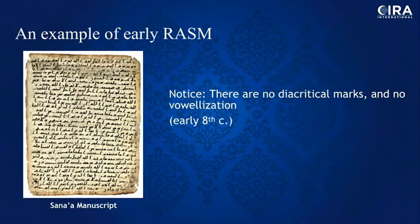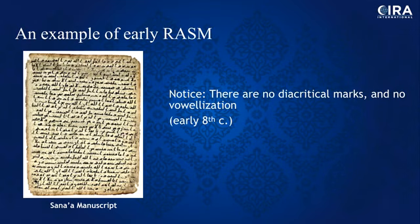Let's look at the Sana'a manuscript — one I'm passionate about because I'm doing my PhD research on it. The one I'm focused on specifically involves what is called a palimpsest, meaning it's a piece of leather that was written on, then wiped off, and another layer written on top. Scholars argue there's a 50-year difference between the lower and upper layers. I would argue it was almost instantaneous — why would you wash off something and write over it unless you made a mistake, changed it, or received instructions to match a standardized reading?